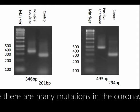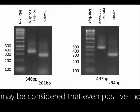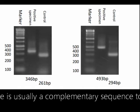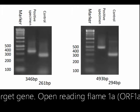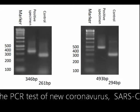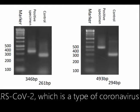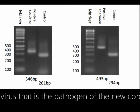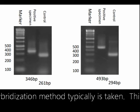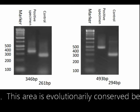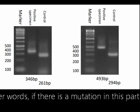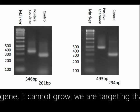Since there are many mutations in the coronavirus, it may be considered that even positive individuals test negative. Open reading frame ORF1A and spike-S are specifically detected in the PCR test of the new coronavirus, SARS-CoV-2, the pathogen of COVID-19. This area is evolutionarily conserved because it is essential for virus growth. If there is a mutation in this part of the gene, the virus cannot grow — and we are targeting that point.